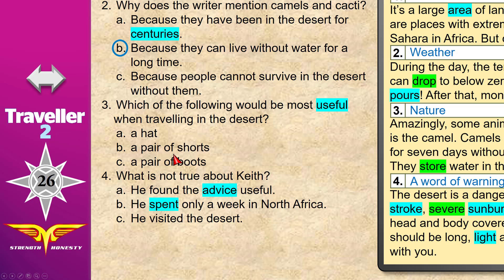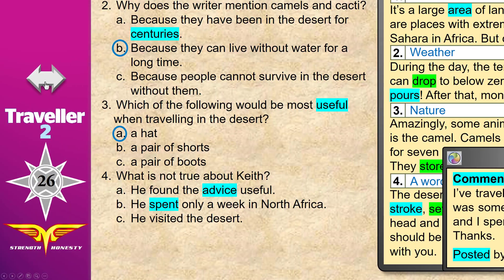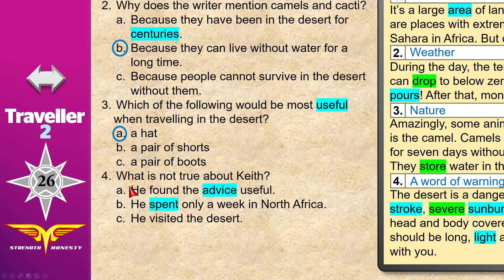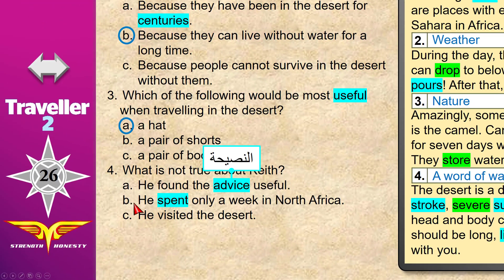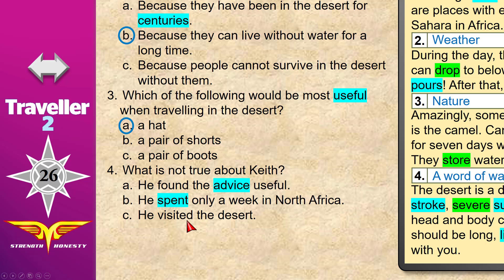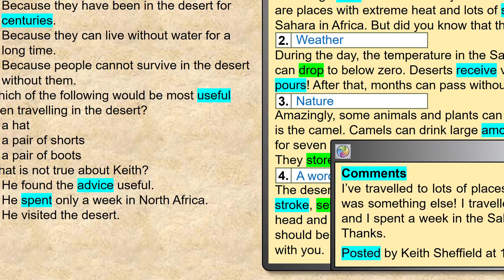You should keep your head and body covered, so shorts are inappropriate. A hat would be great — answer A. Boots are not necessarily needed; regular shoes would be okay if you wear long clothing. Question 4: What is NOT true about Keith? He found the advice useful; he spent only a week in North Africa; or he visited the desert. Answer B is not correct — he spent a month in North Africa and only a week in the Sahara.